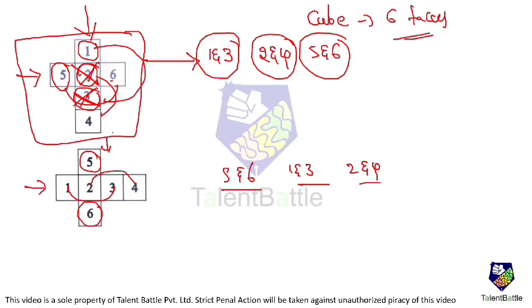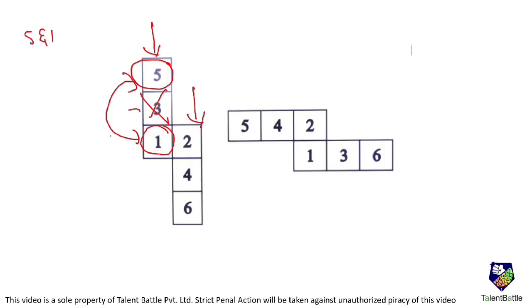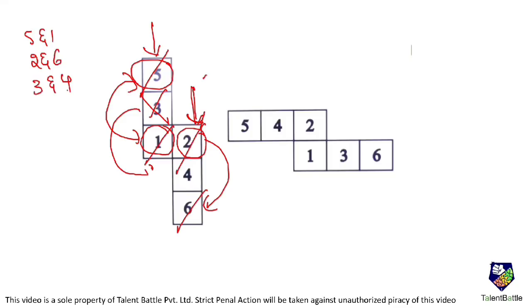Once you know how to identify the opposite face, it is easy to solve the question. For an L-shaped layout with four faces in one direction and two in another: going one direction, five and one are opposite faces, two and six are opposite faces. What is left over — three and four — will also be opposite faces. Similarly for another configuration: five and two are opposite, one and six are opposite, and three and four are the remaining opposite faces.